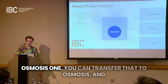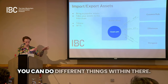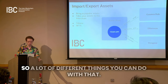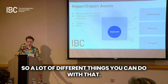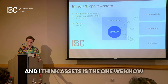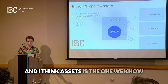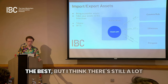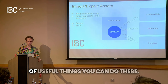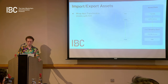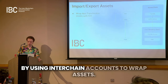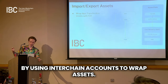You have the Mad Scientist NFT — the Osmosis one — you can transfer that to Osmosis and do different things with them there. Assets is the use case we know best, but I think there's still a lot of useful things you can do there by using interchain accounts to wrap assets.